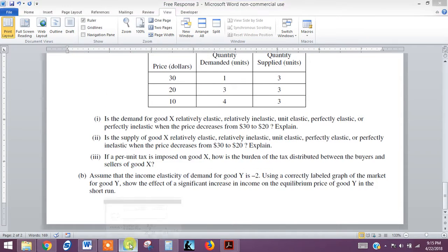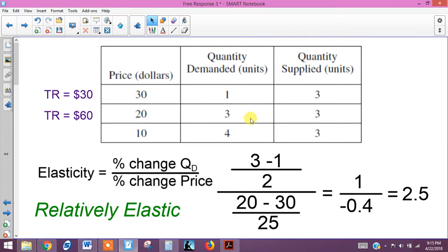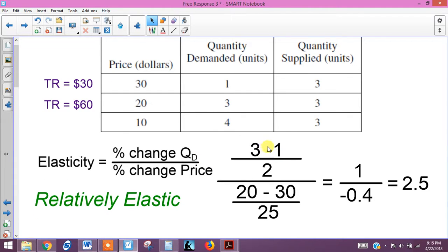I've got it right over here. We simply can use our formula. Just to remind you, elasticity equals the percentage change in quantity over the percentage change in price. In this case, it's the quantity demanded. So we simply compute the percentage change in quantity demanded by subtracting where we started from where we ended up. We started with a unit of 1 and ended up with a unit of 3 with this drop in price.